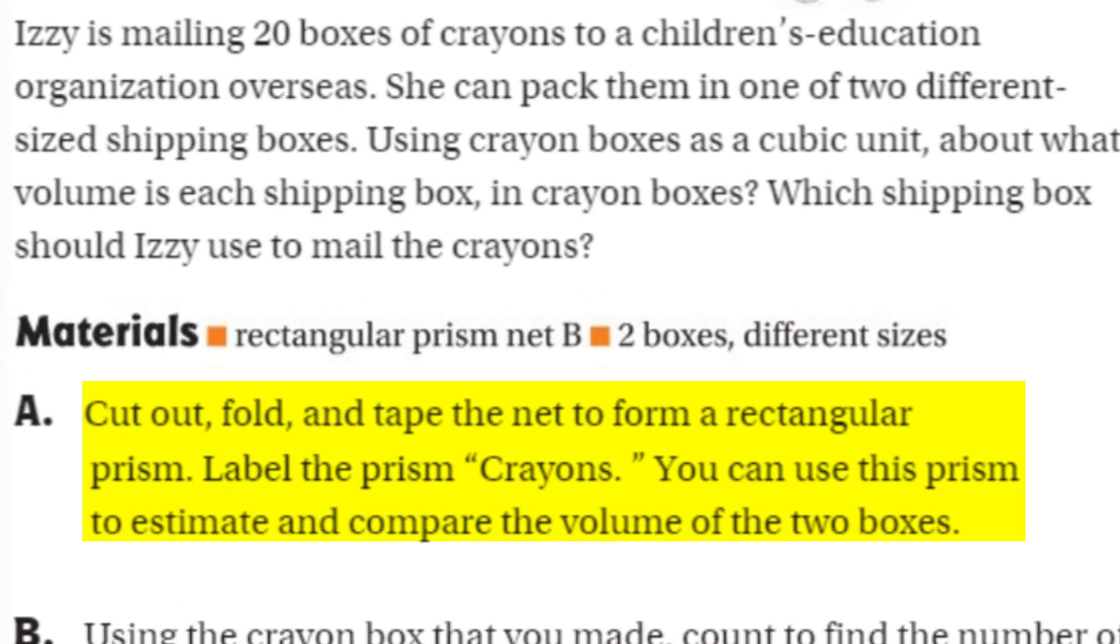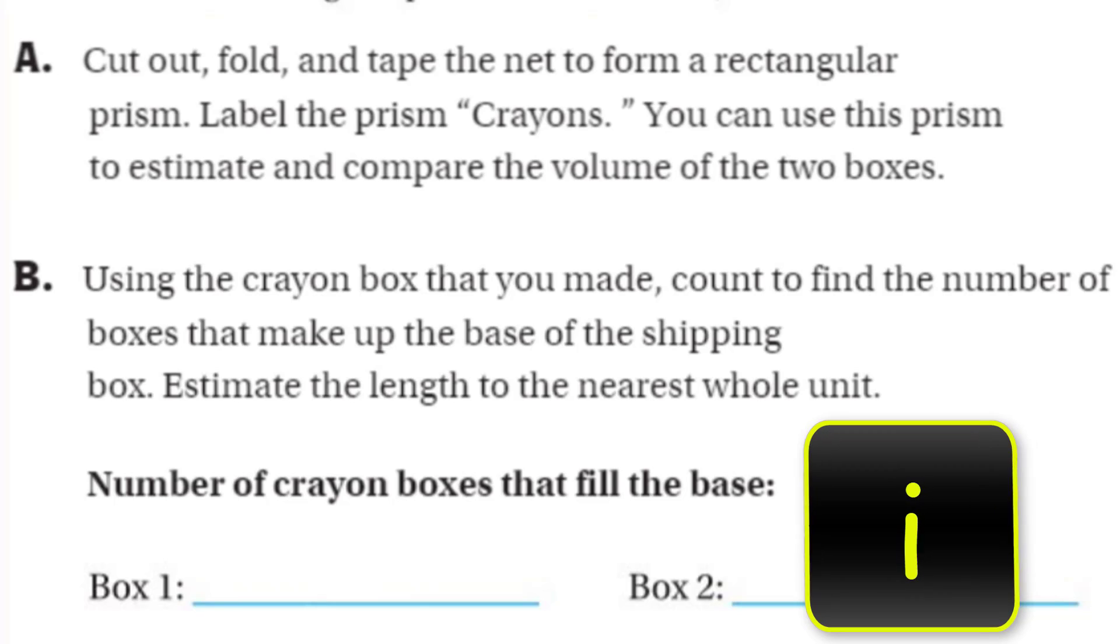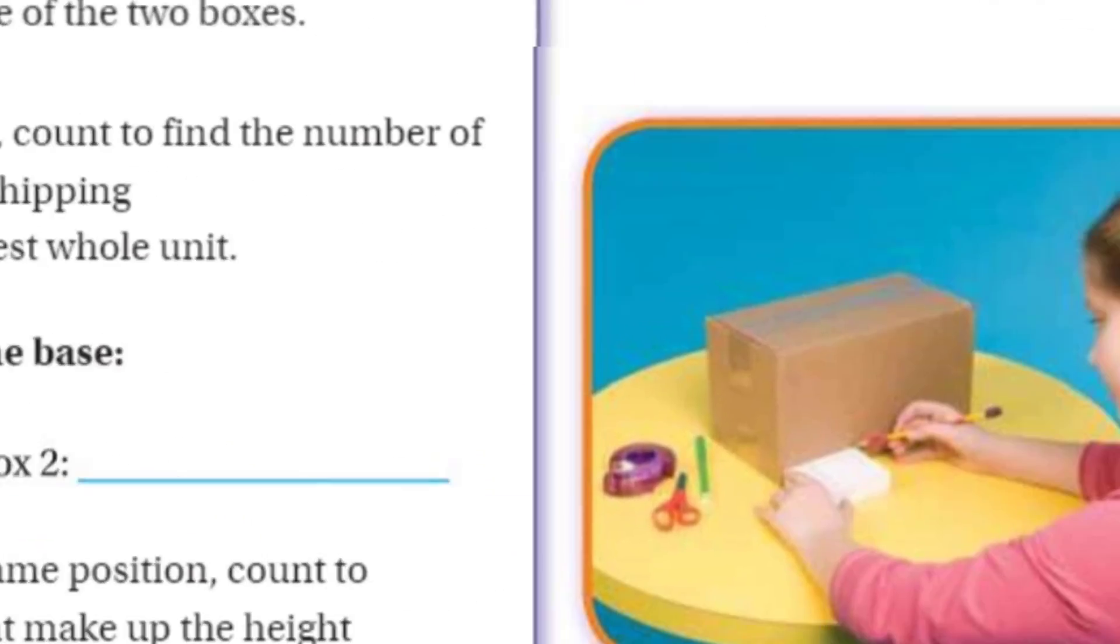But what I'm going to probably do is just kind of put up a couple of different 3D pictures up here. And I'll just use these for my estimation. So here's like a couple of boxes here. Shipping boxes is just having them there so you understand the whole 3D thing going on. But it says you're going to cut out, fold, and tape the net to form a rectangular prism. Label the prism crayons.